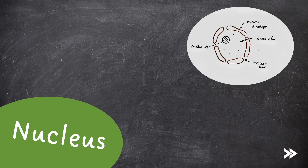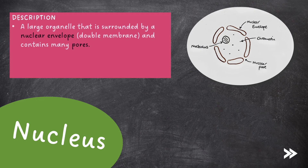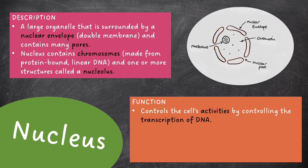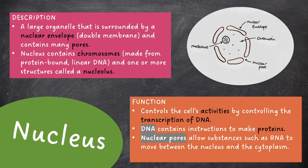Next, we have the nucleus, which is a large organelle that is surrounded by a nuclear envelope — a double membrane that contains many pores. The nucleus contains chromosomes made from protein-bound linear DNA and one or more structures called a nucleolus. The nucleus controls the cell's activities by controlling the transcription of DNA. DNA contains instructions to make proteins. The nuclear pores allow substances such as RNA to move between the nucleus and the cytoplasm. The nucleolus is the site of ribosome synthesis.